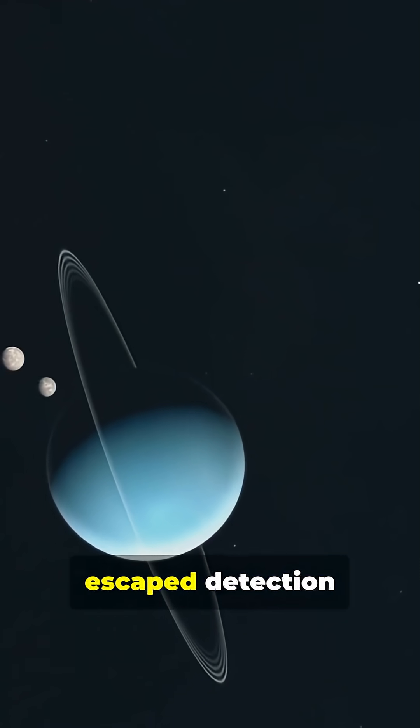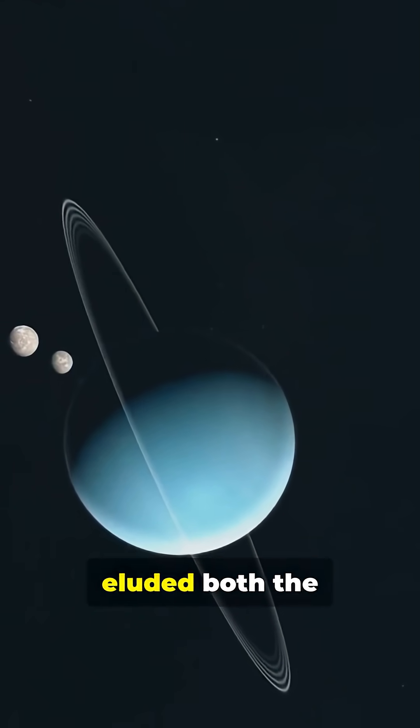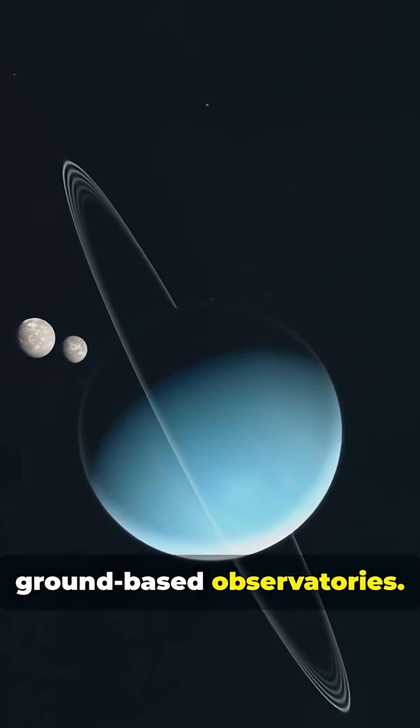Its modest size is exactly why it escaped detection during Voyager 2's 1986 flyby and eluded both the Hubble Space Telescope and ground-based observatories.